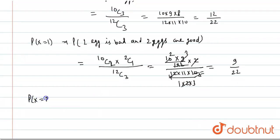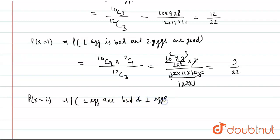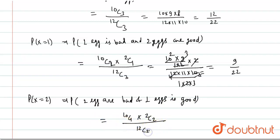P(X = 2) means that 2 eggs are bad and 1 egg is good. This equals 10C1 × 2C2 divided by 12C3, which is 10 × 1 divided by (12 × 11 × 10) / (1 × 2 × 3). This equals 1/22.